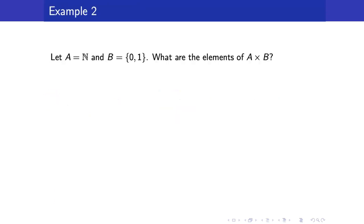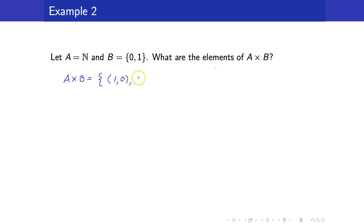The Cartesian product of sets is not just confined to finite sets; we can also form the Cartesian product involving infinite sets. For example, if A is the set of natural numbers and B is the set containing 0 and 1, then A cross B would have infinitely many elements: (1,0), (1,1), (2,0), (2,1), and so on and so forth.